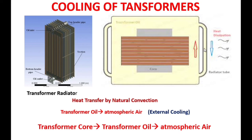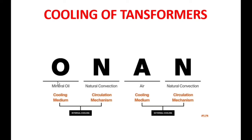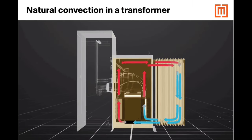The transformer oil dissipates its heat to the surrounding atmospheric air whenever the air contacts the cooling tubes. Surrounding air receives heat from the transformer oil; transformer oil loses its heat to the surrounding air. In this way, external cooling maintains the optimum temperature of the transformer. Heat is transferred from the transformer core to the transformer oil, then from the transformer oil to the atmospheric air. These transformers are known as ONAN type transformers — O stands for mineral oil (transformer oil), N for natural convection internally, A for air, and N for natural convection externally.